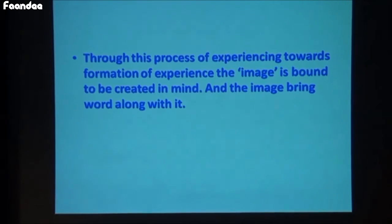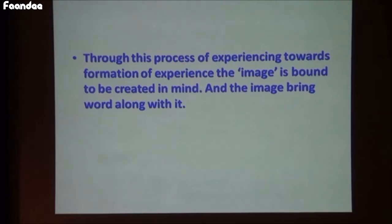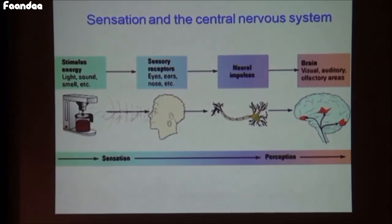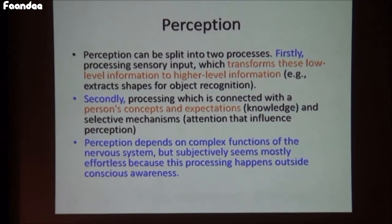Through this process of experiencing towards formation of experience, the image is bound to be created in the mind, and the image brings word along with it. If the word is predominant in the entire process, let us first illustrate and understand that as a basic process of perception. Then let us come to the very primary process of transition and perception — all of us know that it has two different parts: one is sensory experience, and the other is the interpretation done by the brain of the sensory experience. Perception depends on complex functions of the nervous system but subjectively seems mostly effortless, because the processing happens outside conscious awareness.